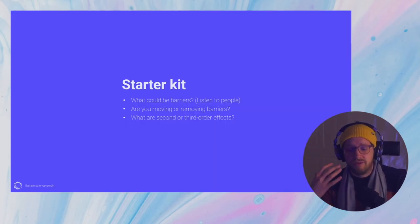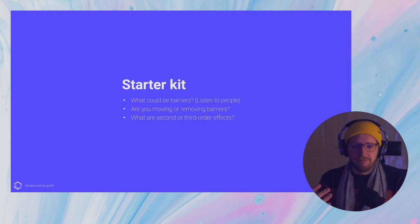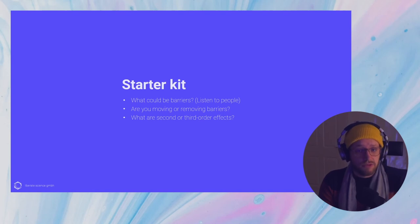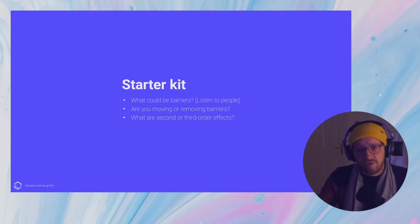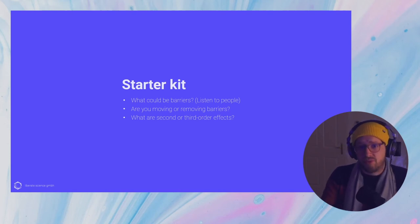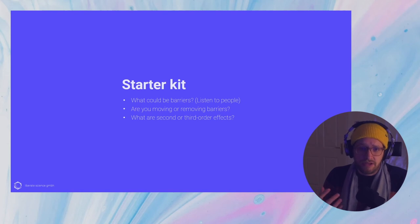A starter kit for research accessibility is to think about what could be barriers — and that doesn't just mean sitting down in an armchair asking yourself what you experience as barriers, but also listening to people and asking what they experience, creating space where people can voice their concerns honestly. Subsequently, if you start instilling change, ask yourself: are you moving or removing barriers? Because if we're just dumping hundreds of thousands of lines of code online, we might be open sourcing something but actually making it much more inaccessible. Just opening up information doesn't mean it becomes more accessible.